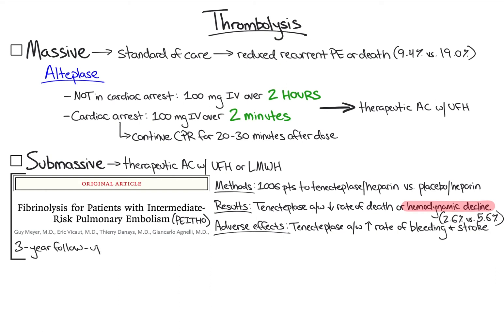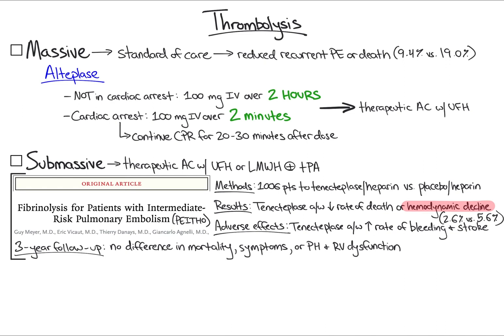A three-year follow-up of 709 patients from the PYTHO trial found no significant difference in mortality, clinical symptoms, or echocardiographic evidence of pulmonary hypertension and/or RV dysfunction between the tenecteplase and placebo groups. Overall, the PYTHO trial and subsequent follow-up provide evidence for thrombolysis only in patients with submassive PE who have failed initial anticoagulation and exhibit signs of hemodynamic decompensation or clinical decline — for example, worsening hypotension or hypoxia and/or new-onset shock after starting anticoagulation.